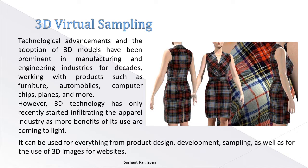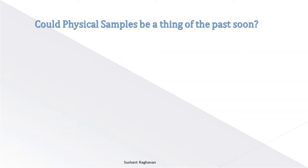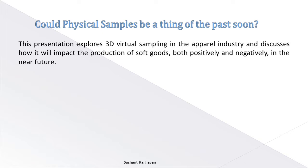It can be used for everything from product design, development, and sampling, as well as for the use of 3D images for websites. Could physical samples be a thing of the past soon? This presentation explores 3D virtual sampling in the apparel industry and discusses how it will impact the production of soft goods both positively and negatively in the near future.